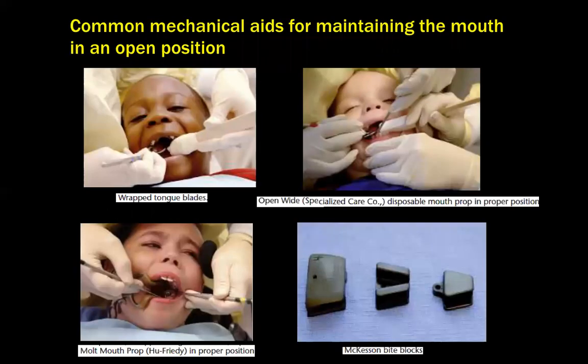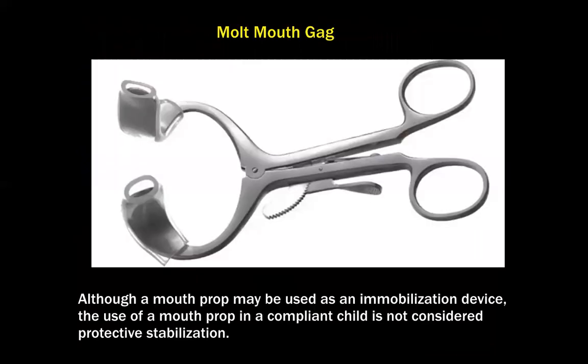The picture depicts common mechanical aids for maintaining the mouth in an open position. The top left shows the wrapped tongue blade, which can be custom made. The top right shows the Open Wide disposable mouth prop in proper position. The lower left shows the Molds mouth prop (Hufriedy make), and the McKissons bite blocks are also available to keep the mouth open.